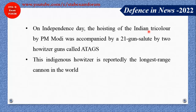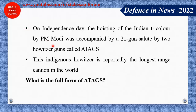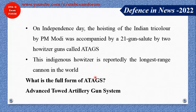You can pause and read this statement question. What is the full form of ATAGS? ATAGS stands for Advanced Towed Artillery Gun System — where 'AG' means Artillery Gun and 'T' means Towed, meaning you can pull it.